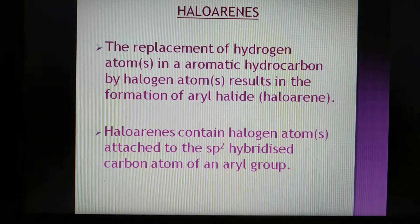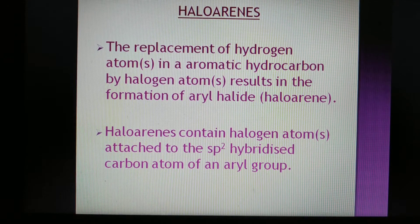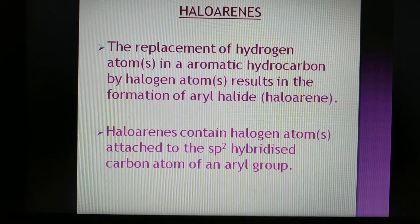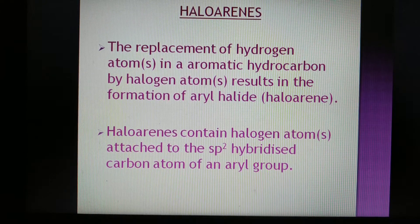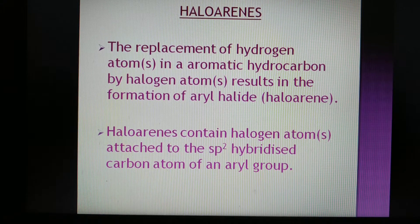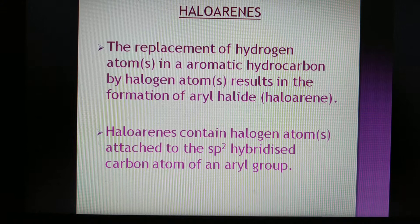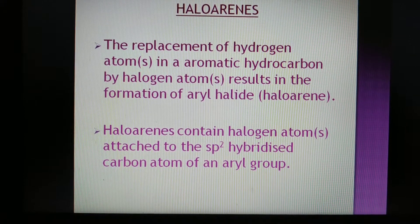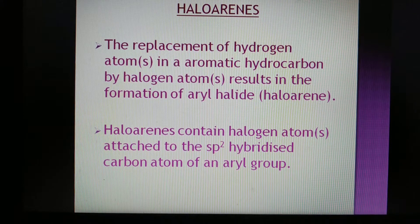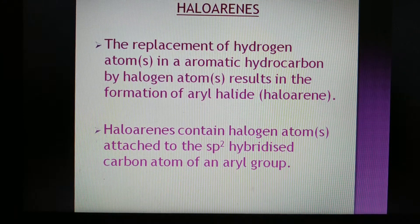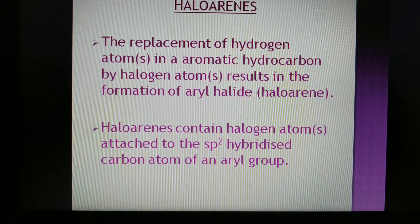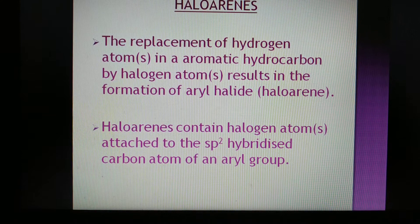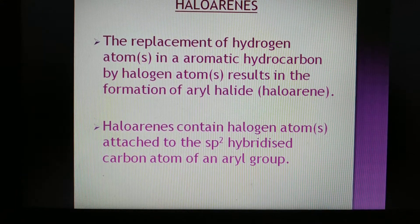Now moving to Haloarenes — the definition is similar, but here we deal with aromatic hydrocarbons. When hydrogen atom(s) of an aromatic hydrocarbon are replaced by halogen atom(s), the product is called an aryl halide or haloarene. In haloarenes, the halogen atom is attached to an sp2 hybridized carbon atom of the aryl group — compared to sp3 in haloalkanes.